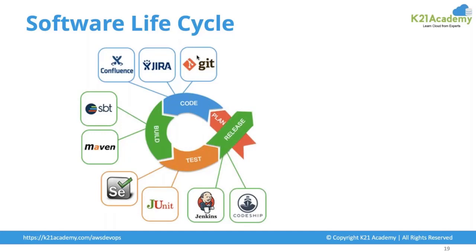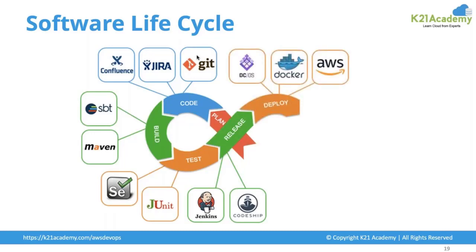After testing, you go for release — you do a deployment to a staging environment or a production environment, which can be done through Jenkins and CodeShip. These are open source tools that allow you to release changes into the environment. After release, you do a deployment to a respective cloud vendor or on-premises server, which can be done through Docker, AWS, or other services.